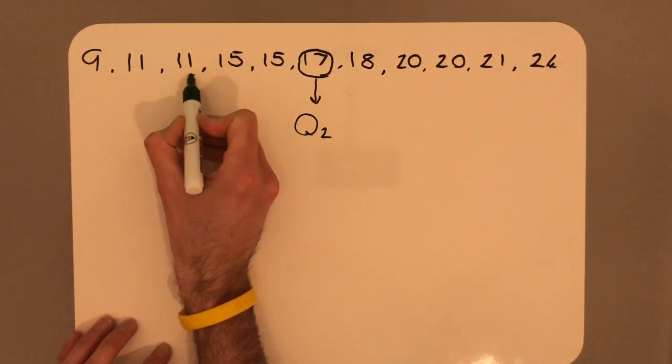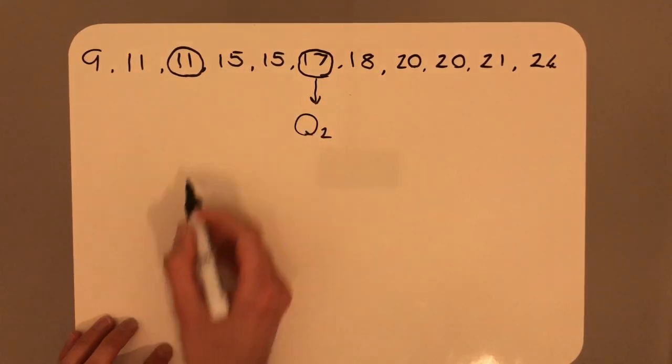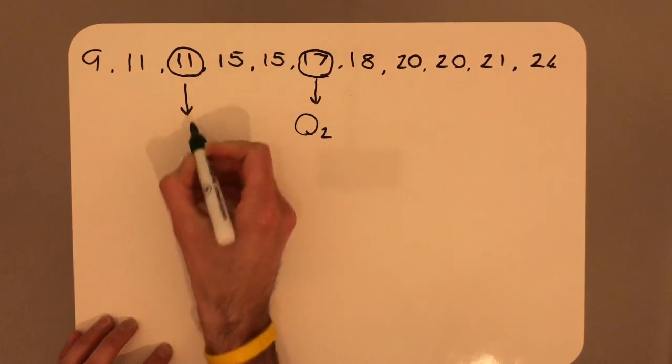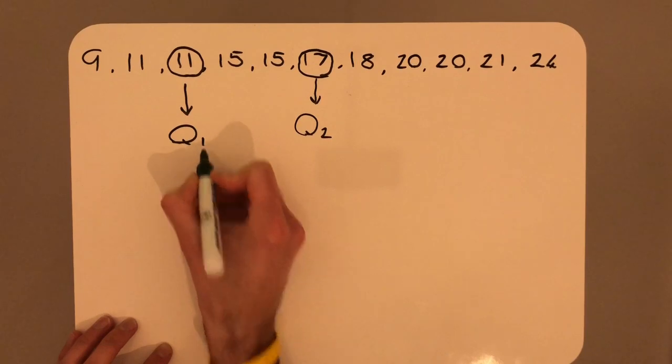One, two, hold, one, two. This will now become quartile 1.